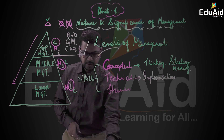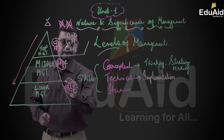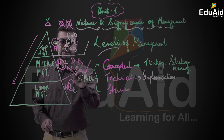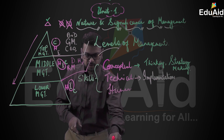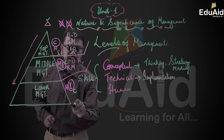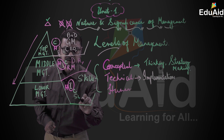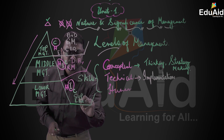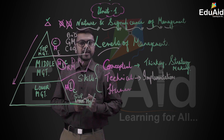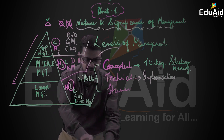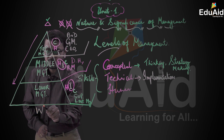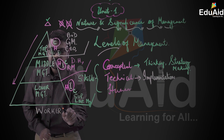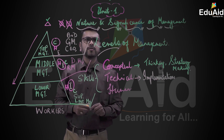In middle level management, you have people who are divisional heads and regional managers — they are all middle level managers. When you talk of lower level managers, these are supervisory positions — supervisors, also called line managers. They are involved in supervising the work. Below them are the workers and staff. This is the total structure when you talk of levels of management.